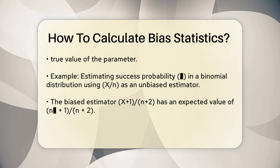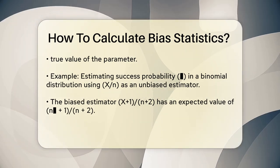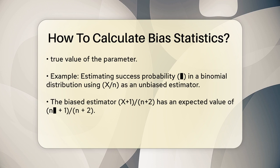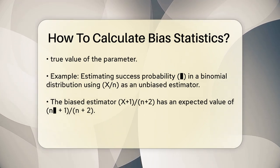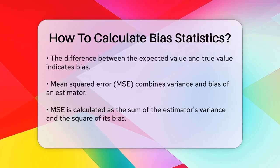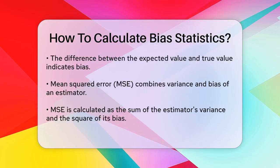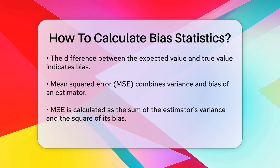To see how this works, let's calculate the expected value of this biased estimator. The expected value of (X+1)/(n+2) is (n*theta + 1)/(n+2). When you compare this to the true value theta, you'll find that the difference is not zero, indicating that the estimator is biased.